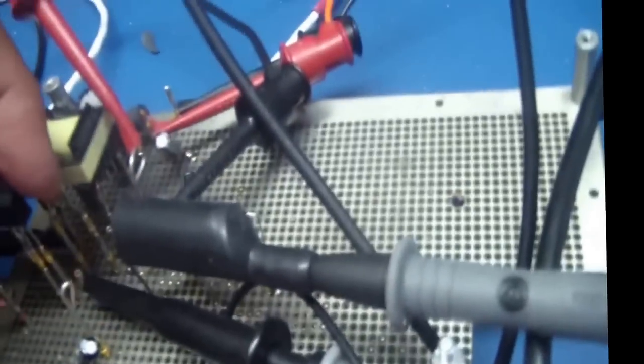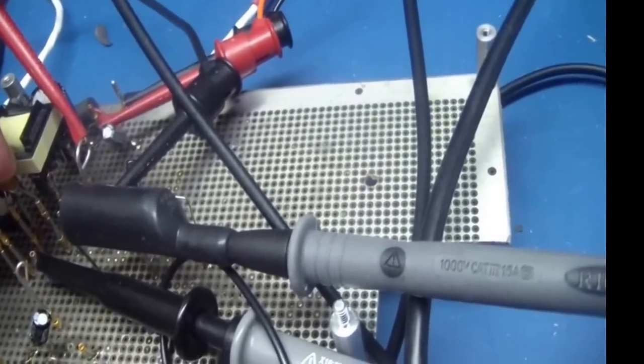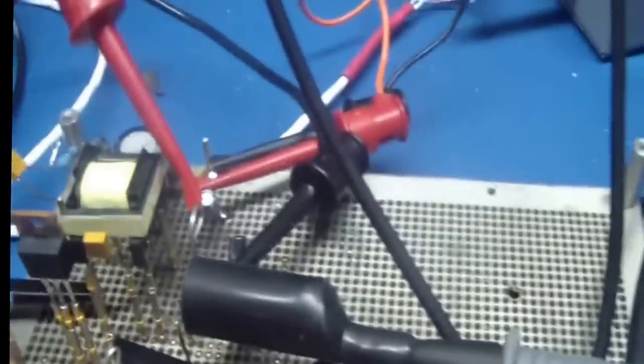Here I have my 680 picofarad cap right there, and I have the pins right here where I can insert a resistor. So I just inserted the snubber.